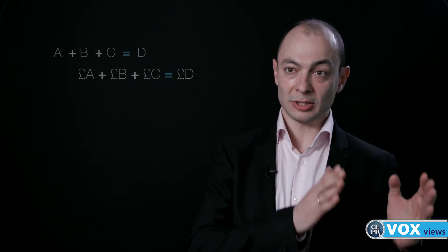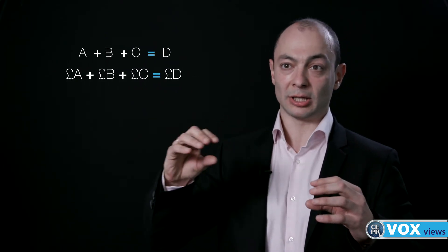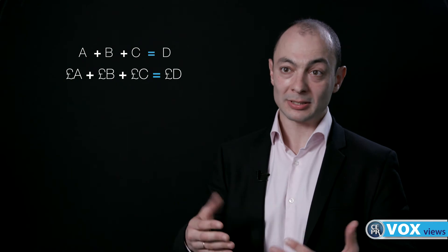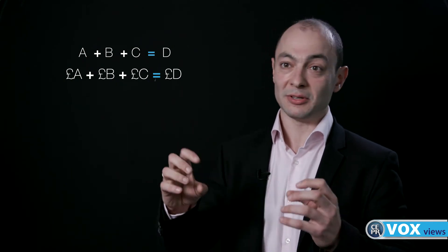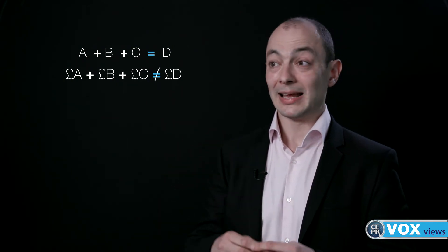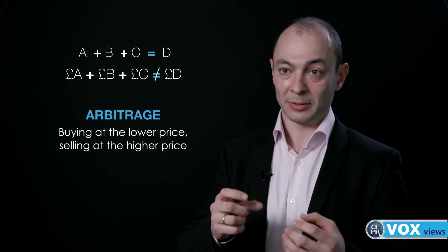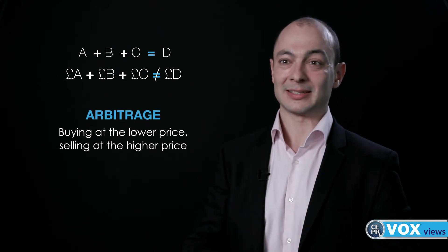Ideally, when markets are perfectly efficient, the price of the ETF should be exactly equal to its net asset value. However, we see in the market persistent deviations between these two. This creates so-called arbitrage activity, where people try to arbitrage the difference.